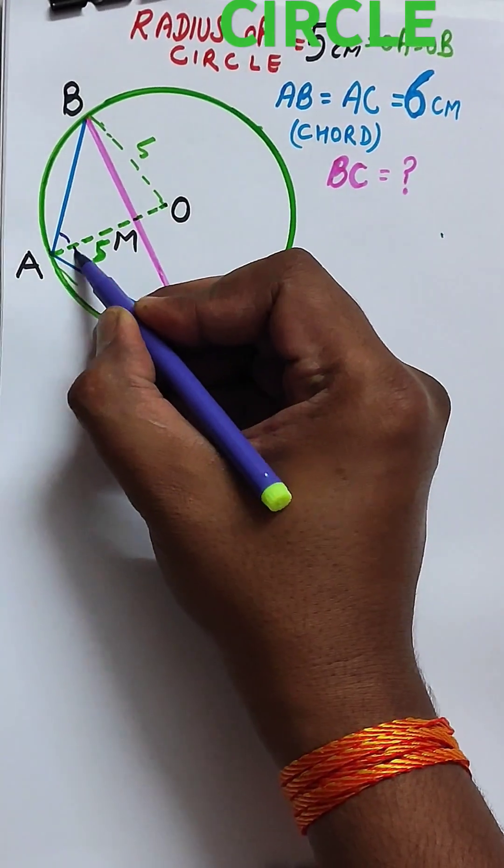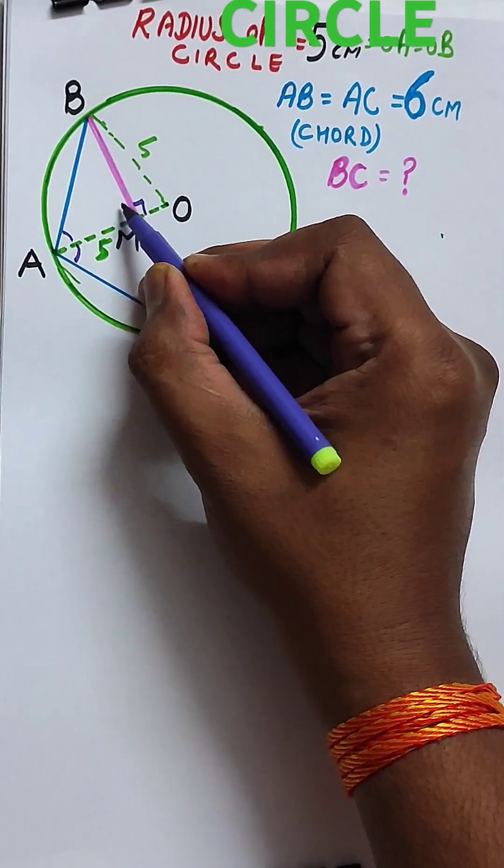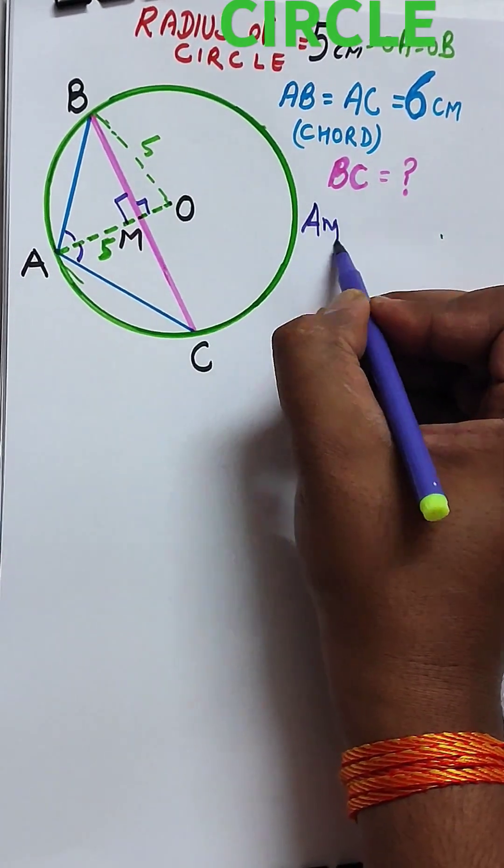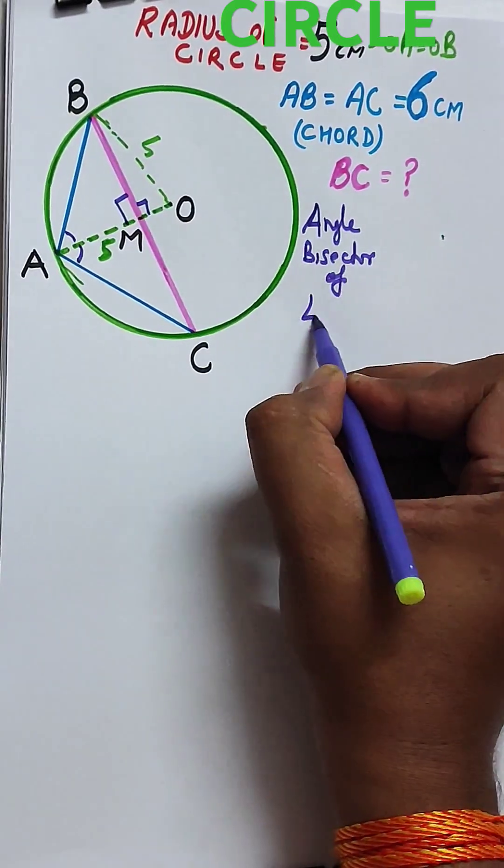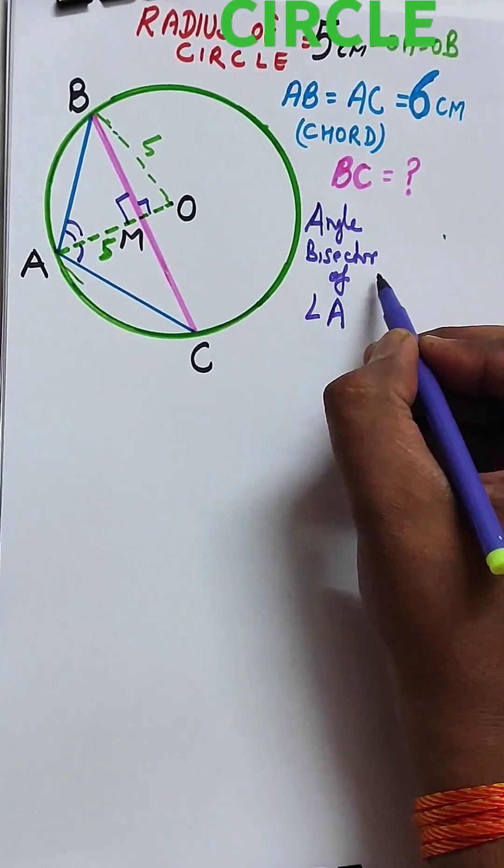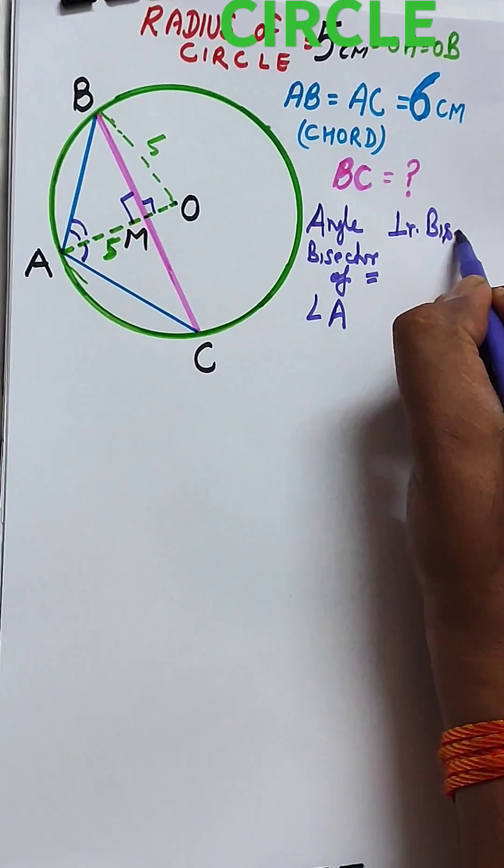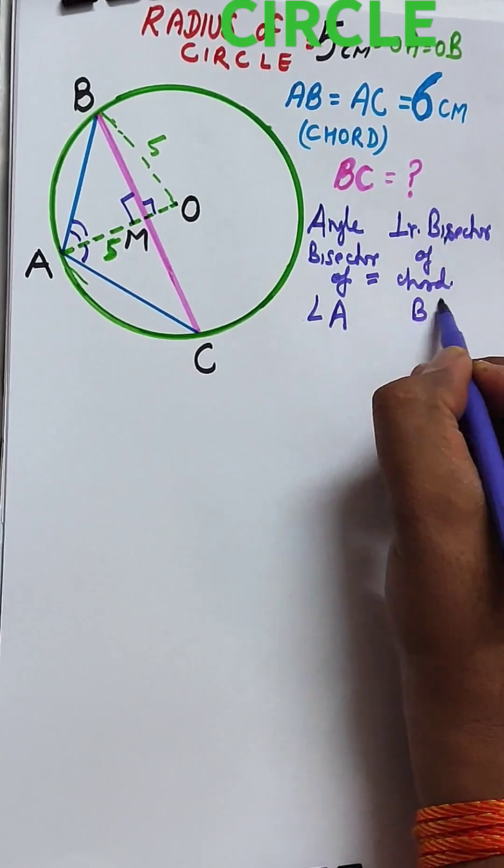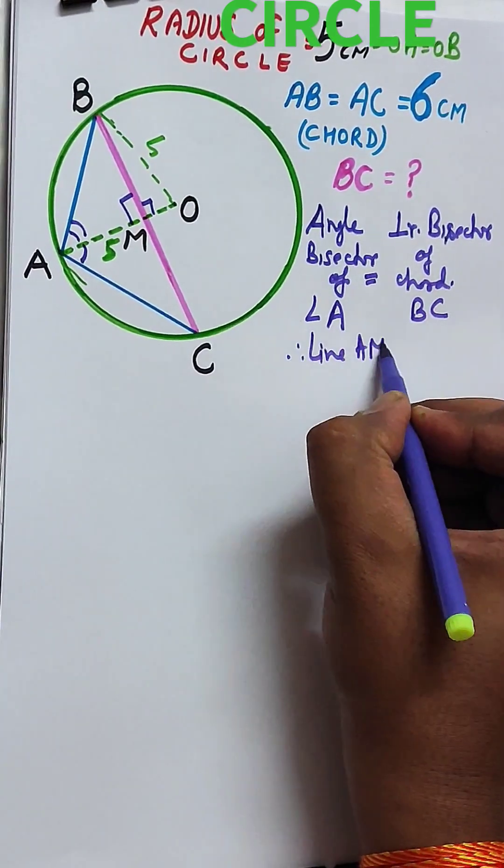Since AB and AC are equal chords of equal length, the angle bisector of angle A will be the same as the perpendicular bisector of chord BC, that is line AMO.